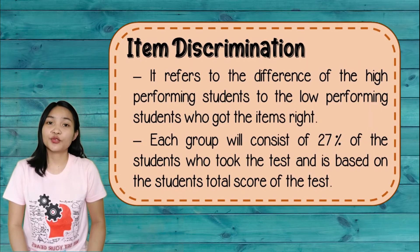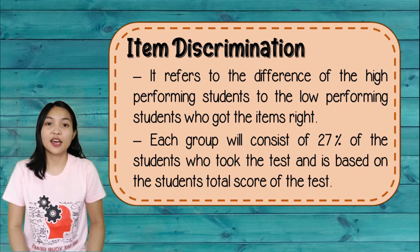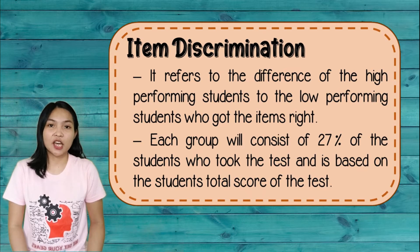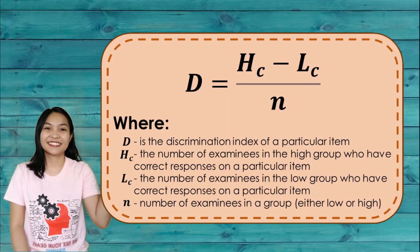Item discrimination, also referred to as the discrimination index, refers to the difference between the proportion of high-performing students who get the item right and the low-performing students who get the item right. It is the degree to which an item discriminates between high-performing and low-performing students. Each group consists of 27 percent of the total students who took the test, and is based on the student's total score. Here is the formula for the discrimination index and its interpretations.